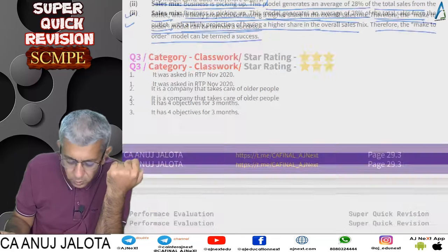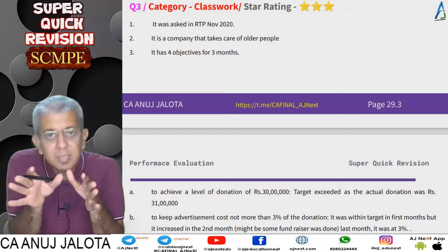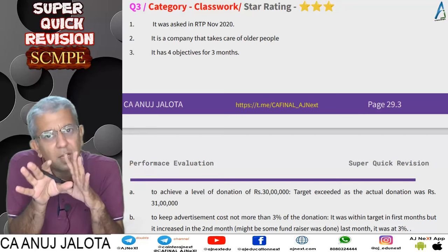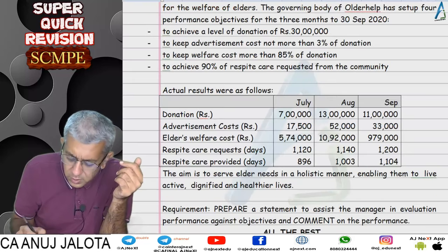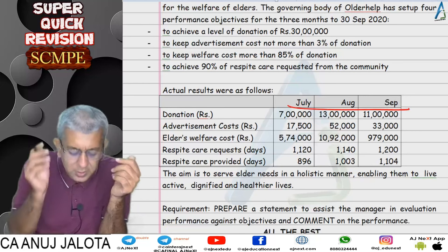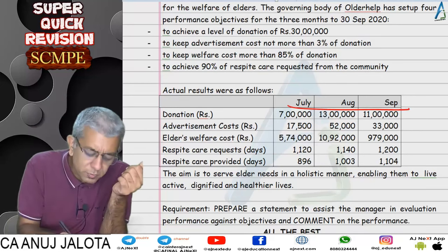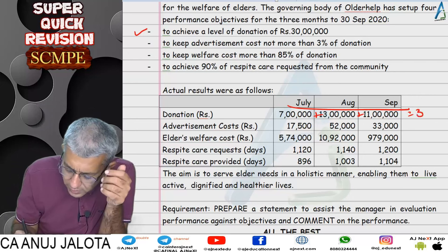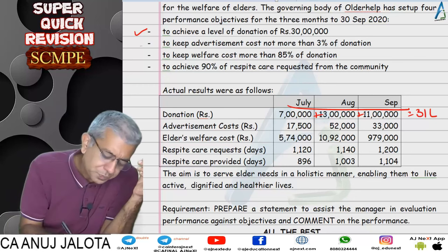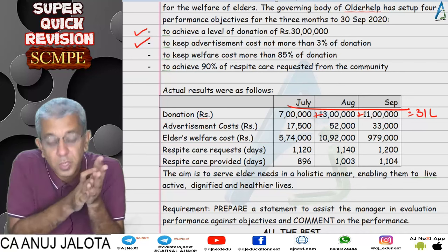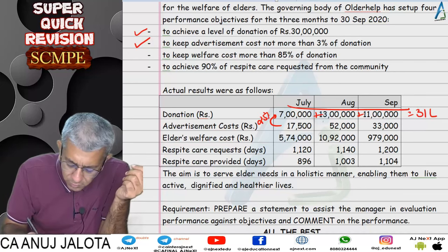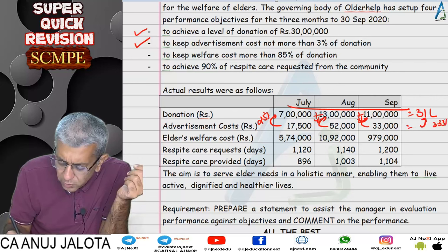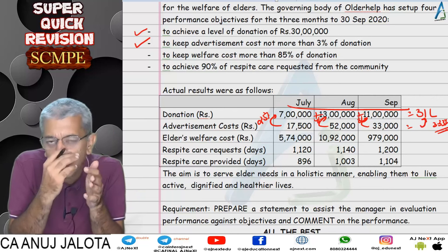Question number three involves a company engaged in charitable work — taking care of elderly people. It is not profit-oriented but focused on helping people. Data is given for three months: July, August, and September. The company has four objectives for this period. The first objective is to achieve total donations of ₹30 lakh. Totaling the three months gives ₹31 lakh, so this objective has been achieved.